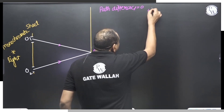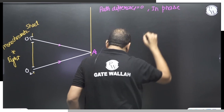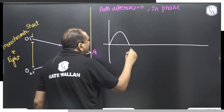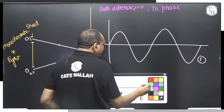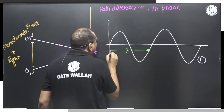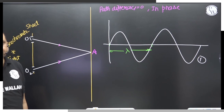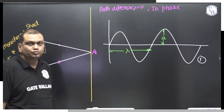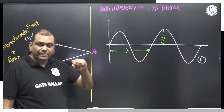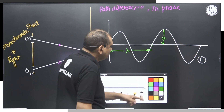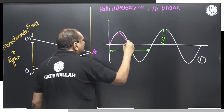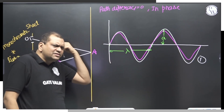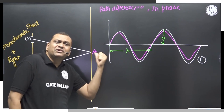With path difference zero, both light waves will be in phase. This is the first light wave — from here to here is called lambda, and this is called amplitude. The second wave will also be in phase. Wavelength will be the same because the source is the same.